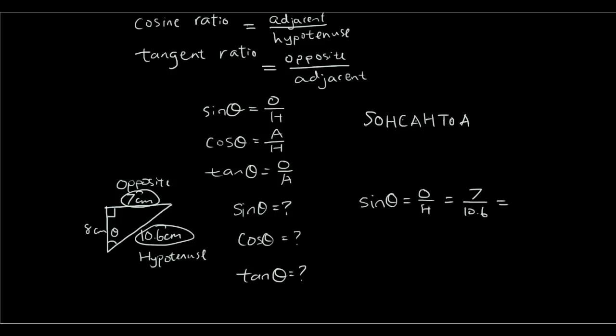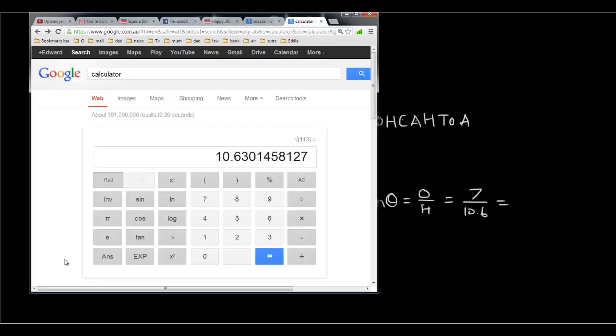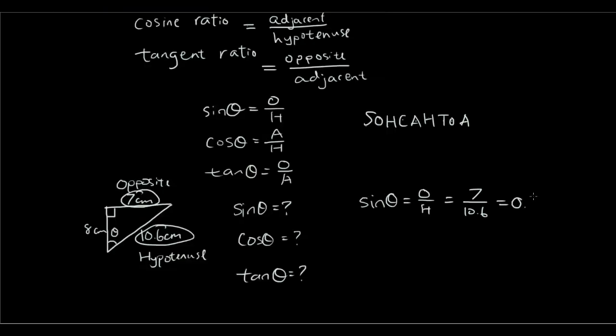So it's going to be 7 divided by 10.6. So you're going to type that in the calculator, 7 divided by 10.6, which is about 0.66. And that is the ratio of the opposite side divided by the hypotenuse side.